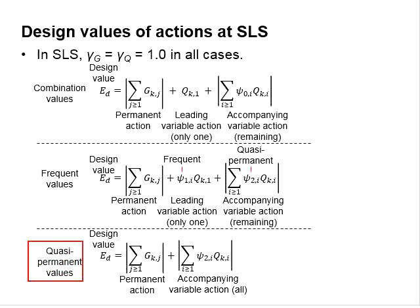As for the quasi-permanent value, all the variable actions are to be multiplied with the factors of the quasi-permanent, which is psi 2.